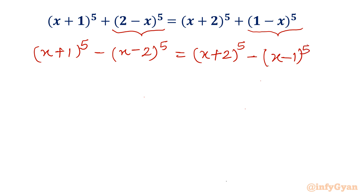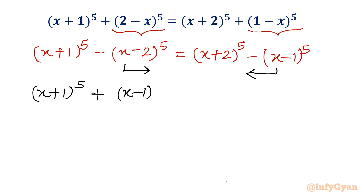Now I will move the minus sign terms to the other side — this term to the left and this term to the right. So the equation becomes: (x + 1)^5 + (x - 1)^5 on the left hand side equals (x + 2)^5 + (x - 2)^5 on the right hand side.